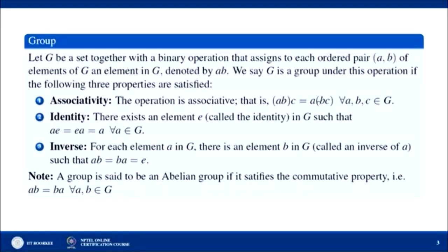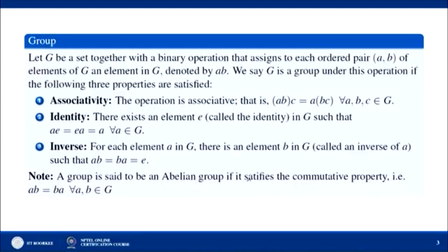To summarize, the four properties are: (1) binary operation (closure), (2) associativity, (3) identity — there exists E such that A·E = E·A = A for every A in G, and (4) inverse — for any A in G there exists B in G with the required result. Moreover, this group is called an abelian group if it also satisfies the commutative property: A·B = B·A for all A, B in G.